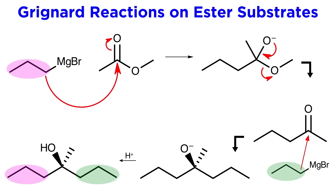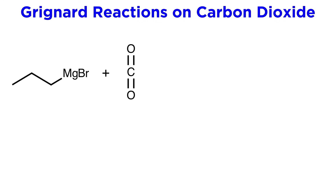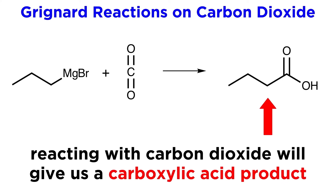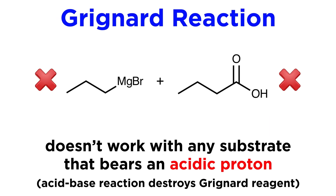We can also have a Grignard reagent react with carbon dioxide. Once the oxyanion protonates, we will actually be left with a carboxylic acid. So that is a slight twist on the standard Grignard reaction.